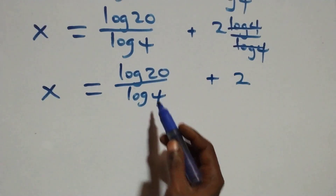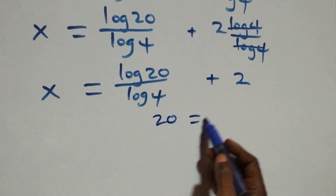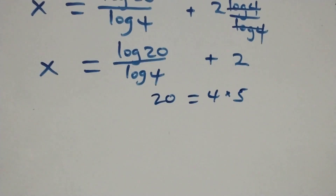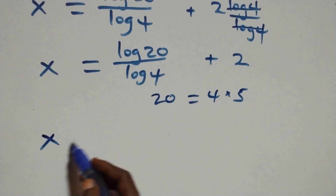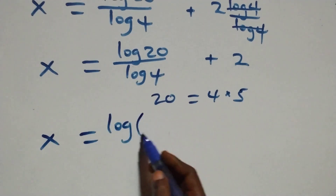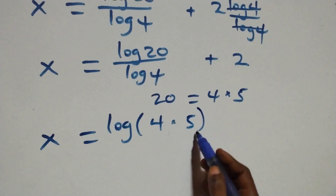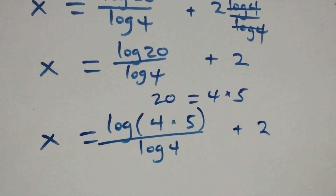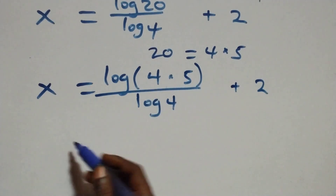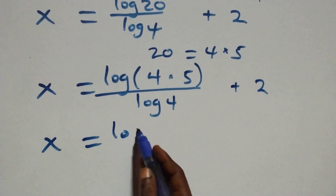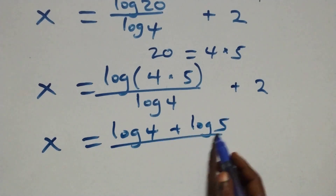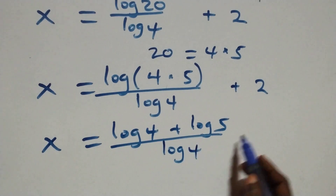From here, we can write 20 as 4 times 5. So what we have becomes x equals log of 4 times 5 over log 4, plus 2. This follows the log product rule, giving us x equals log 4 plus log 5, all over log 4, plus 2.